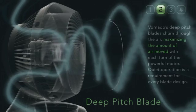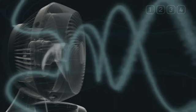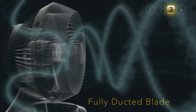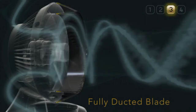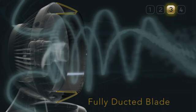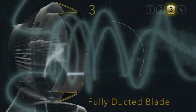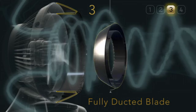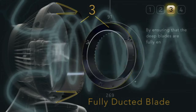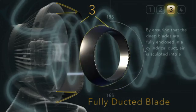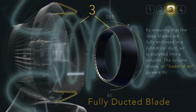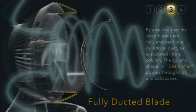A high volume of air is now moving through the circulator, but the next element is critical to directing the airflow, allowing it to travel long distances. By ensuring that the deep blades are fully enclosed in a cylindrical duct, air is sculpted into a column. The column shape, or beam of air, powers through hot and cold zones.